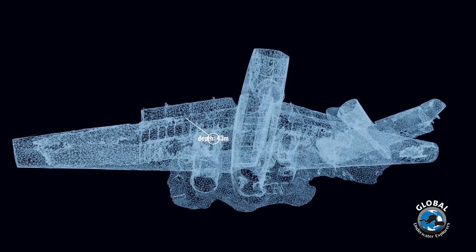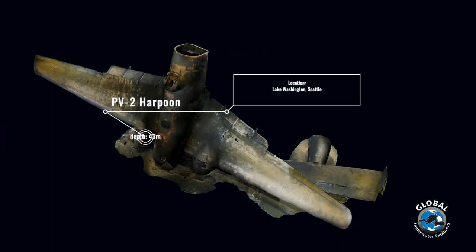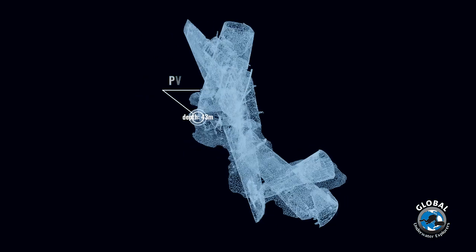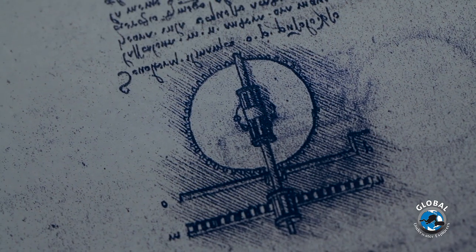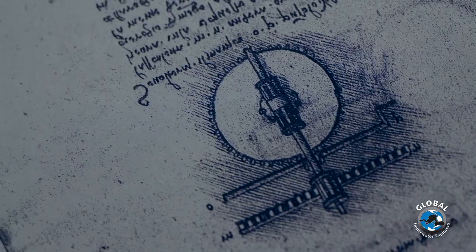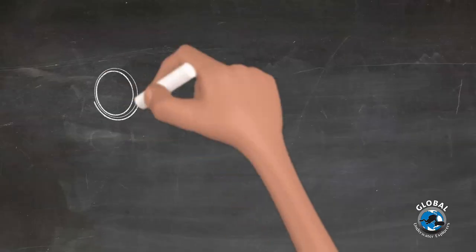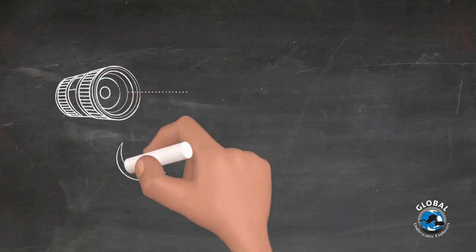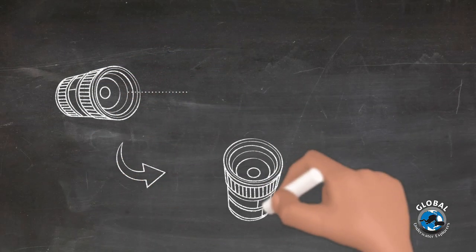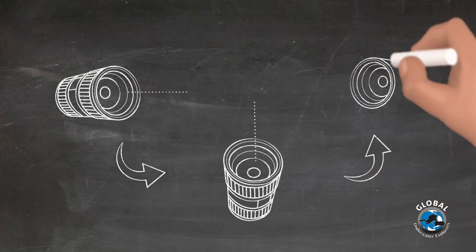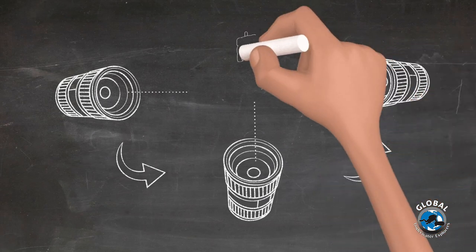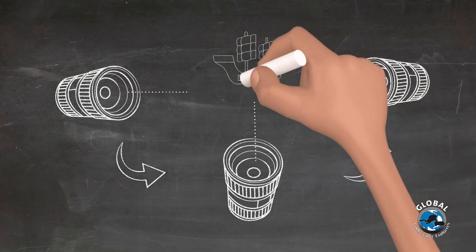Photogrammetry is defined as the science of making measurements from photographs. It was actually first described by Leonardo da Vinci in 1480, approximately 400 years before cameras had really been invented. It all comes down to the concept of perspective — that a moving viewpoint gives you a different perspective on an object.